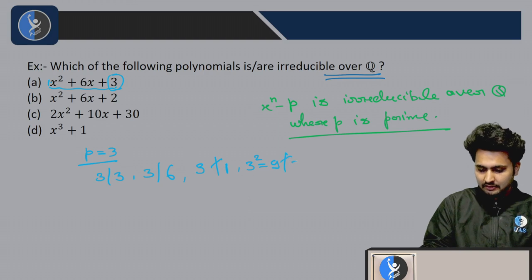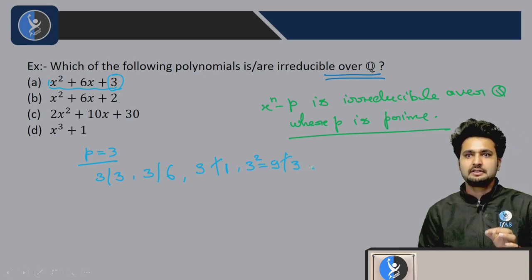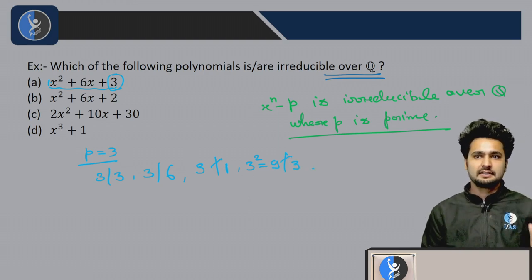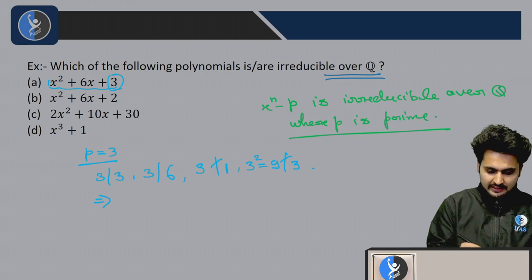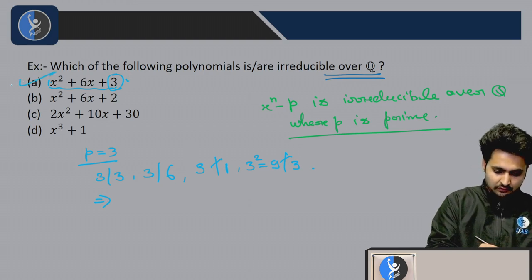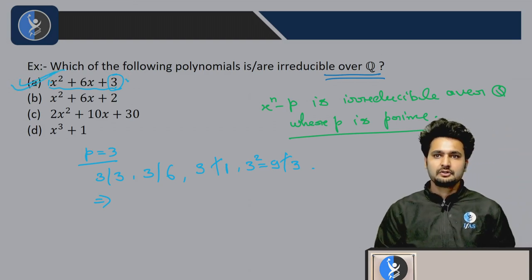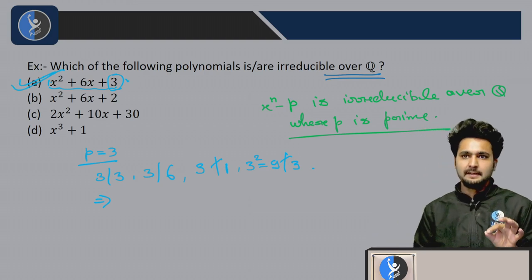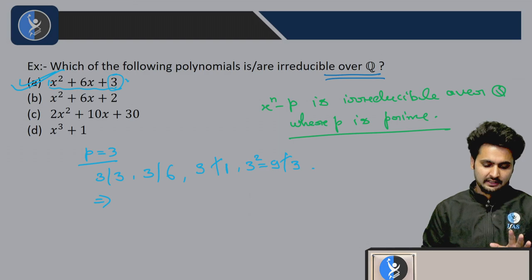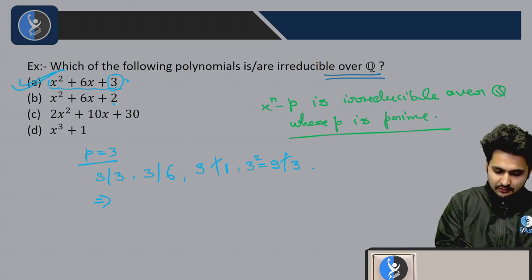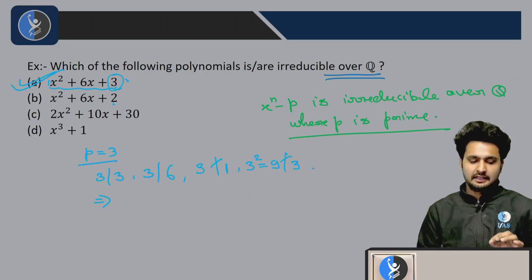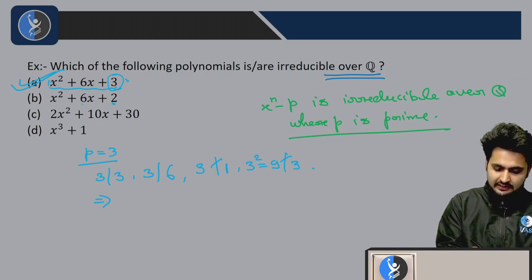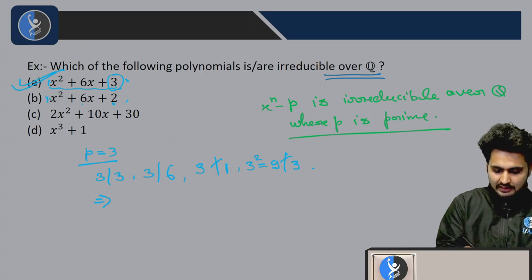And p squared equals 9 does not divide 3. Then we have 3 which satisfies all of Eisenstein's irreducibility criteria, which implies that this is irreducible over Q. In the same way if you look for option b, 2 satisfies all the Eisenstein criterion.